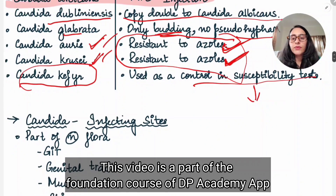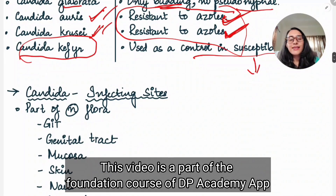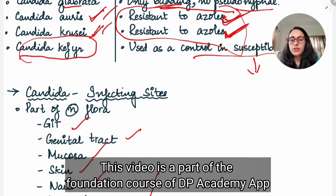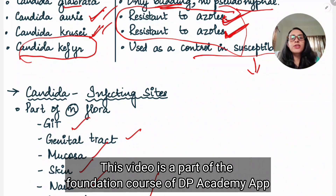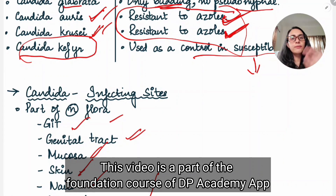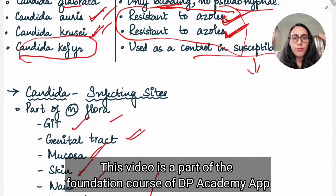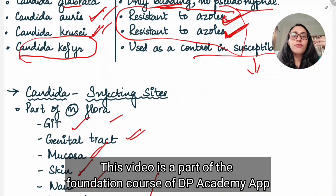Candida is present as normal flora in the GI system, in the genital tract, in the mucosa, in the skin, in nails, and in internal organs. But in case of HIV patients or immunocompromised patients where normal immunity is decreased, the normal flora is going to cause infection. When immunity is suppressed, Candida is going to cause infection.